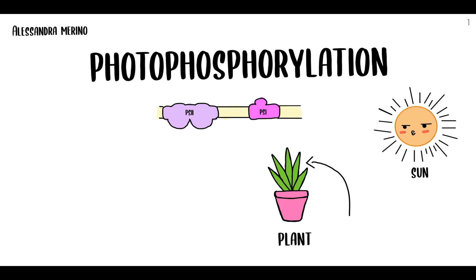Photosystem 1, which is PS1, and Photosystem 2, which you can see there in purple. PS2 is first in the path of electron flow — I know it's kind of confusing because it's named with a two, so you would think it's the second one, but it's actually first. It was named that way because it was discovered after PS1. So just remember that PS2 is first in the path. Lastly, there are two different kinds of photophosphorylation: cyclic and non-cyclic.